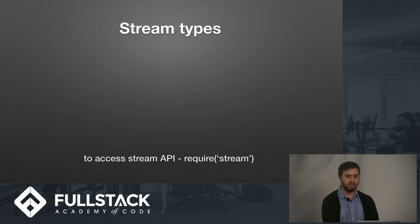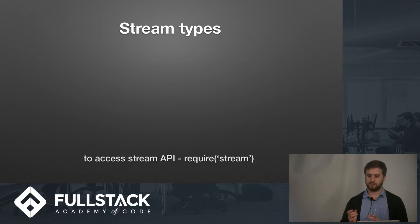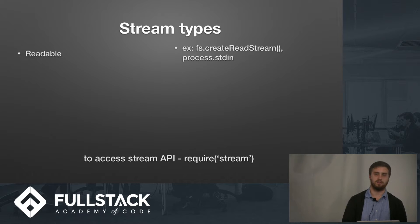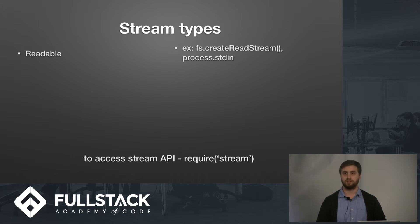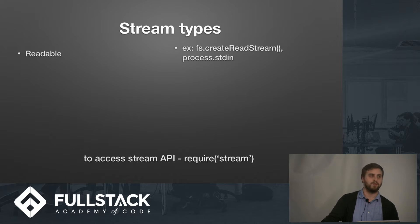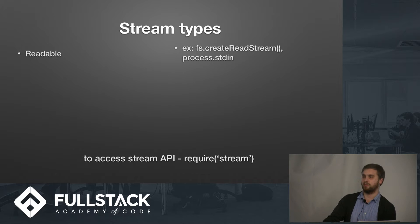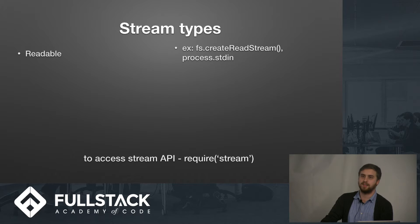There are three main kinds of stream types and then one kind of special case. The easiest is the readable stream. In Node, we have the fs module for access to the file system, and we simply would create a read stream, which gives us access to data that we can stream in from a file. The most basic stream we probably deal with is process.stdin — when you're running a Node process on a server, you can type into it, and that's your standard input.